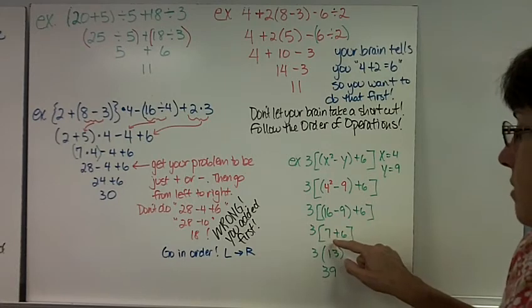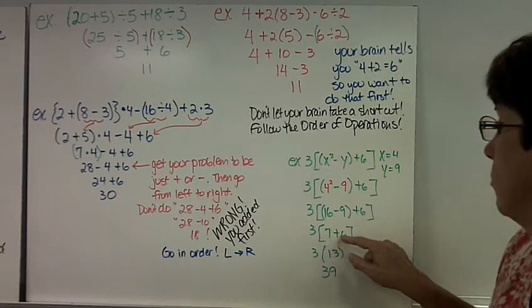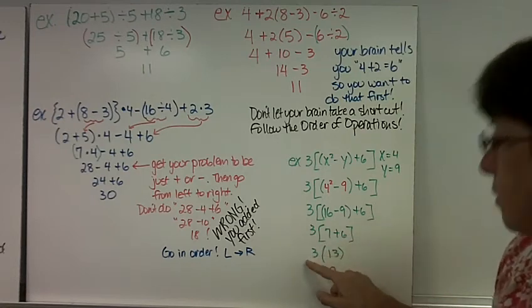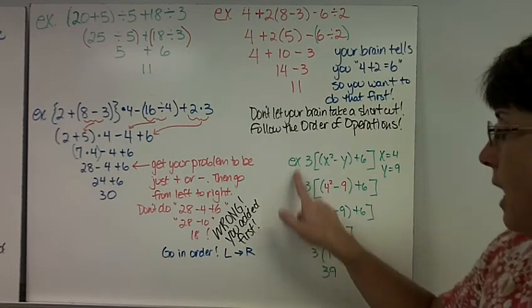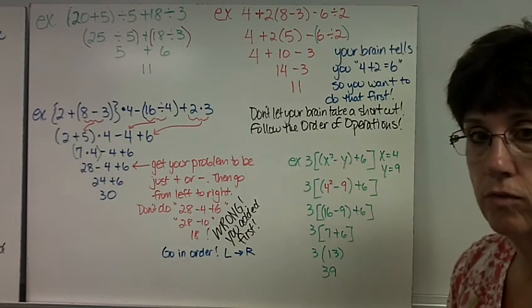16 take away 9 is 7. Now I have 7 plus 6. Still in parentheses, 7 plus 6 is 13. 13 times 3 finally is 39. I can't multiply by 3 until I get to the very end because I have all this stuff in parentheses I need to do first.